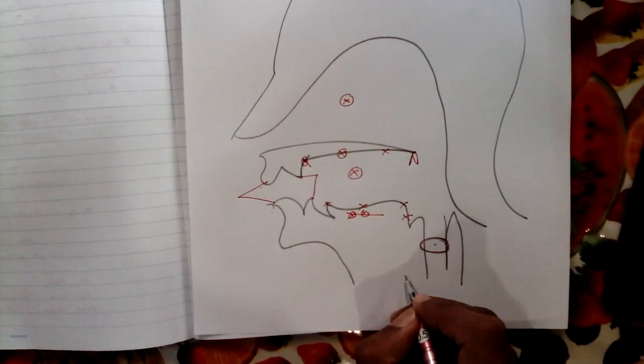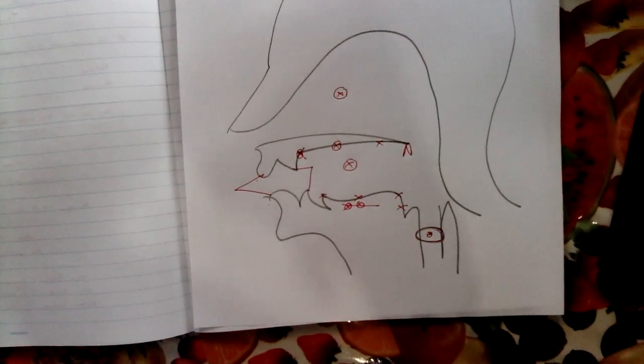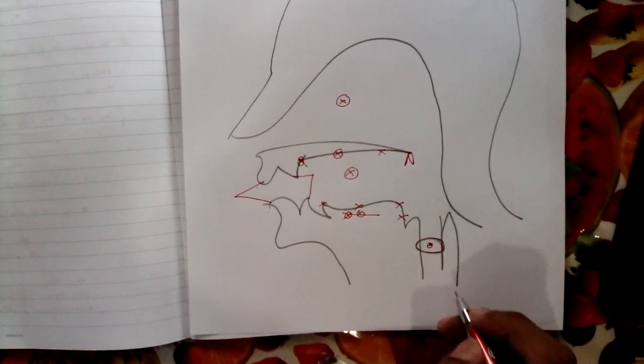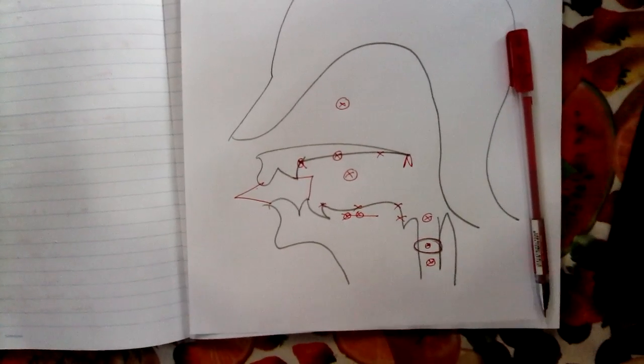And this is the vocal folds or the vocal cords and the opening which you call the glottis, and both of them are located in the larynx.